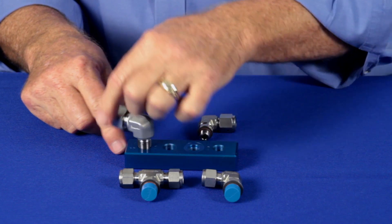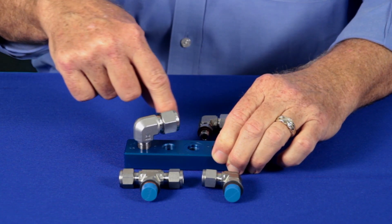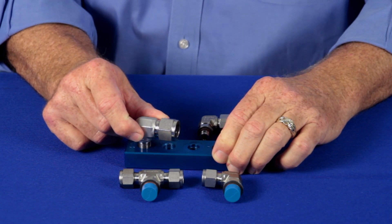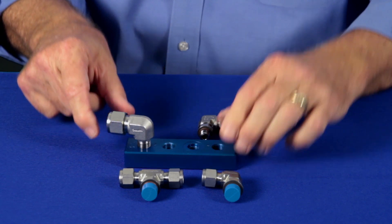You tighten down the NPT thread, and because NPT threads seal on the thread themselves, inevitably it's going to point in the wrong direction. You want it to point in that direction.